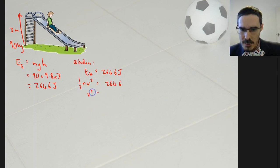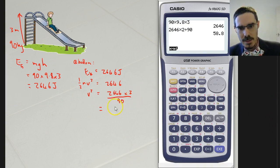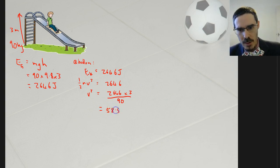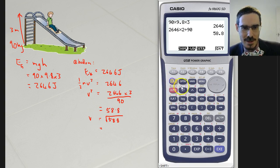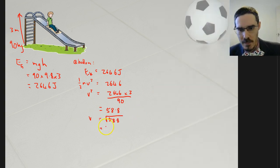So the velocity squared is 2,646 times 2 divided by the mass, which was 90. 2,646 times 2 divided by 90. 58.8. And if that's v squared, then v must be the square root of that. Square root of my answer. 7.7 metres per second.